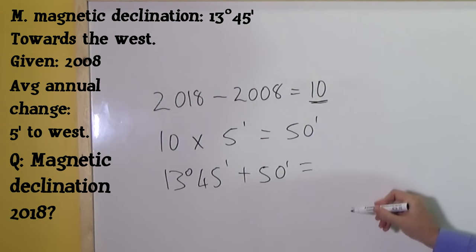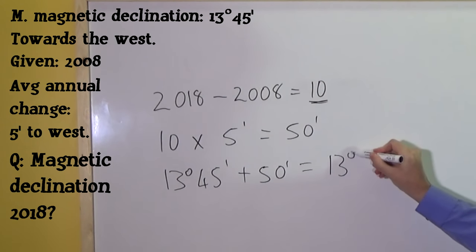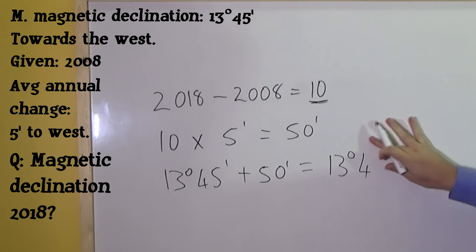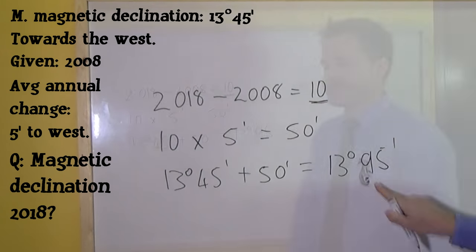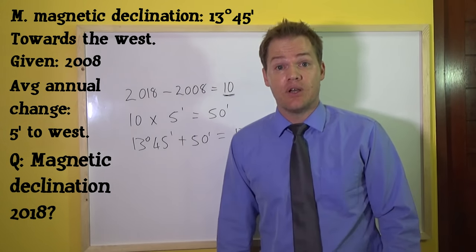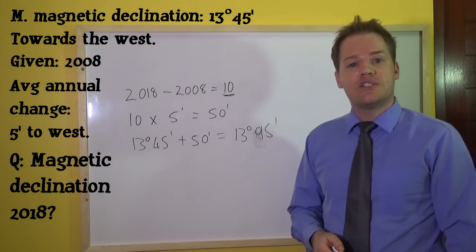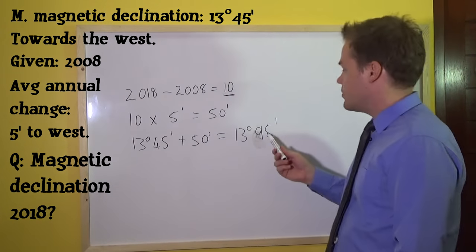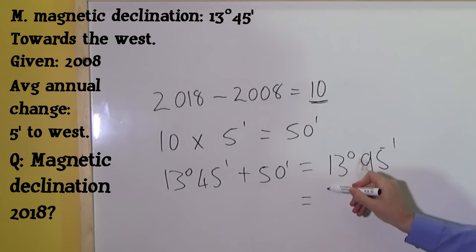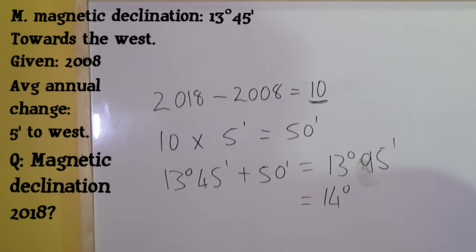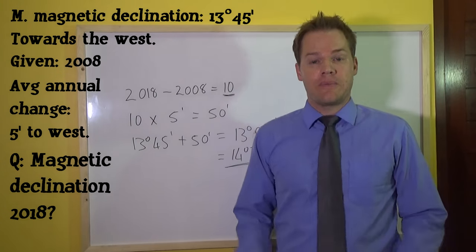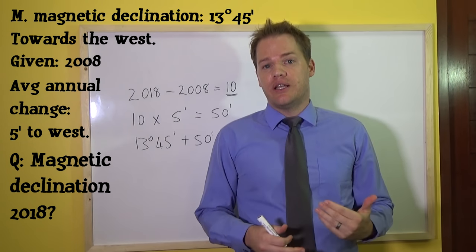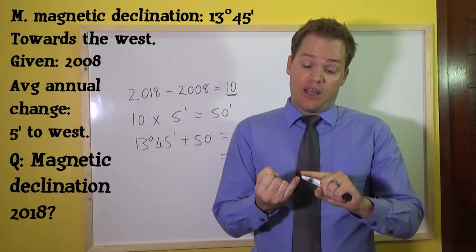If we add this up, the total will be 13 degrees and 95 minutes. Now, this answer is actually incorrect — there are only 60 minutes in one degree, so we can't say 95 minutes. That is why we change this answer to 14 degrees and 35 minutes, and so this is your magnetic declination.